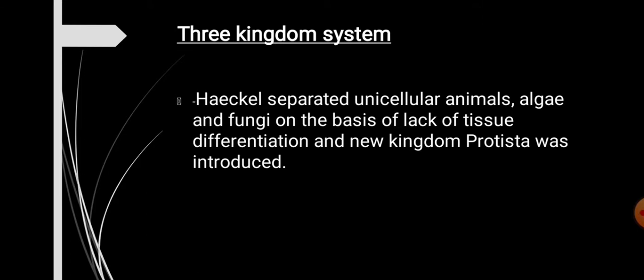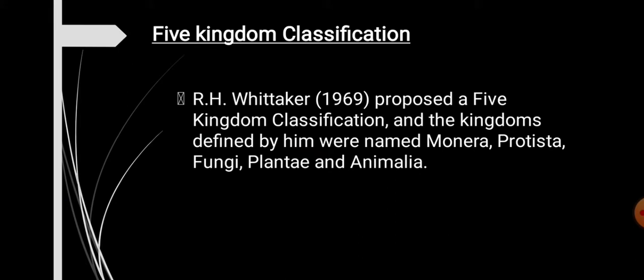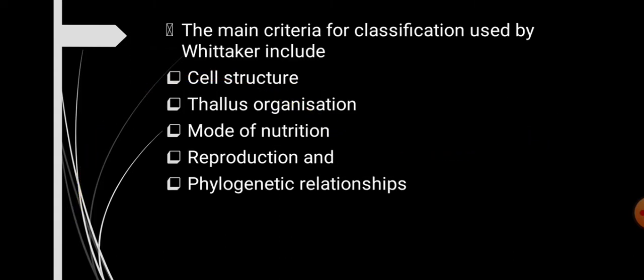The three-kingdom system was soon replaced by the five-kingdom system of classification, proposed by R. H. Whittaker. The kingdoms defined by Whittaker were: Kingdom Monera, Kingdom Protista, Kingdom Fungi, Kingdom Plantae, and Kingdom Animalia. This five-kingdom system of classification is the most widely approved system to date.